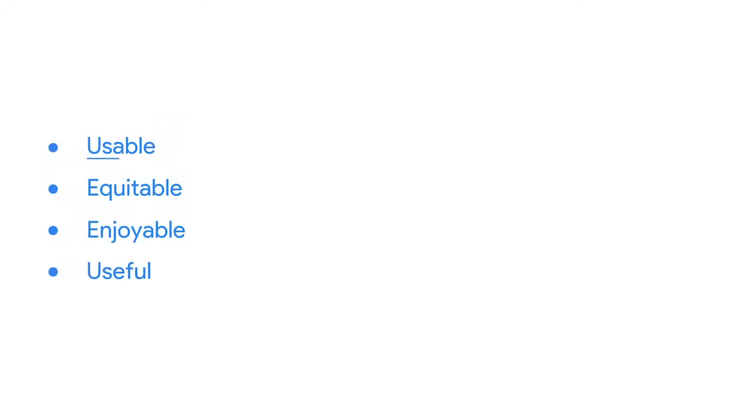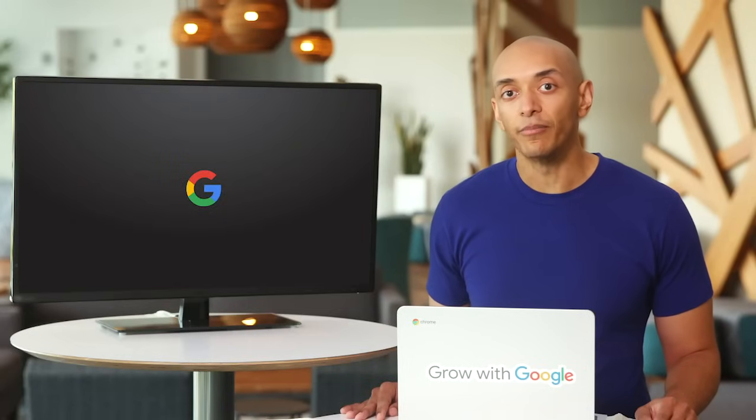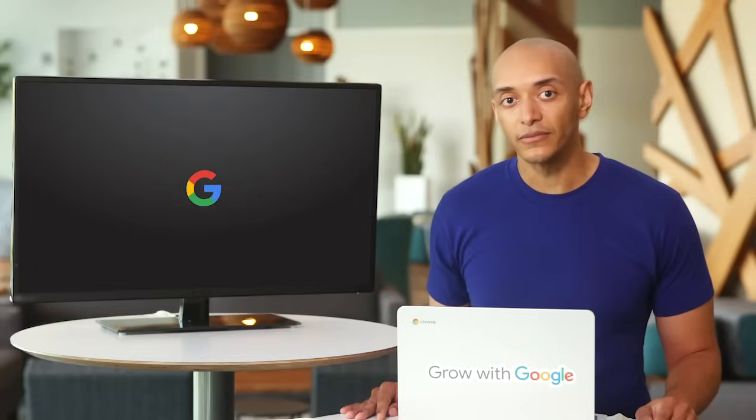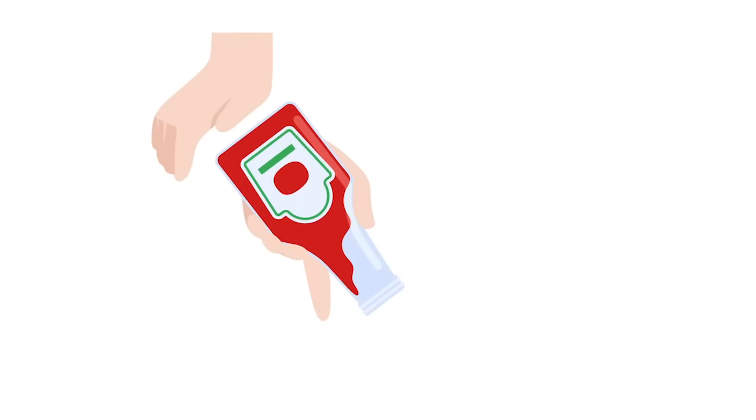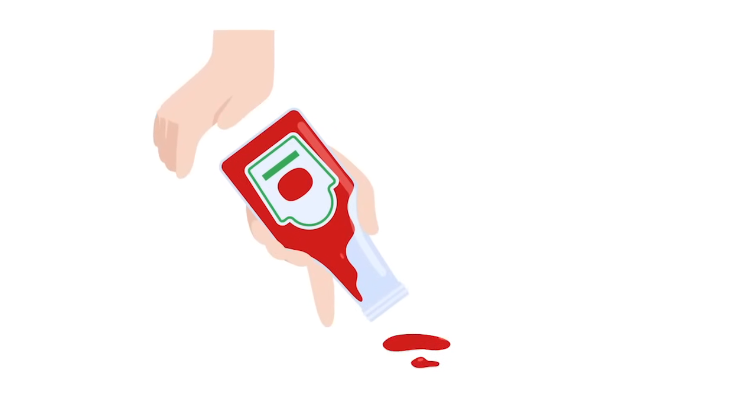User experience is about improving usability, or making something easier to use. This means that the design, structure, and purpose of the product are clear to everyone. Think about a ketchup bottle. Historically, ketchup came in a glass bottle. The user had to hit the bottom of the glass to make ketchup come out, and often no ketchup or too much ketchup would come out. Today the ketchup bottle has been redesigned into a plastic, squeezable bottle, which makes it easier to use and allows users to control how much ketchup comes out.